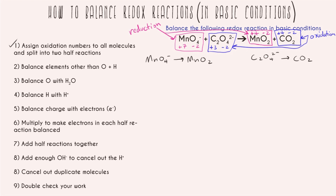Step two: balance elements other than oxygen and hydrogen. For manganese we're already done — we only have one on each side. But for the carbon-containing compounds we need to do some balancing: we have two carbons on the left-hand side and one on the right-hand side, so we add a coefficient of two on the right.